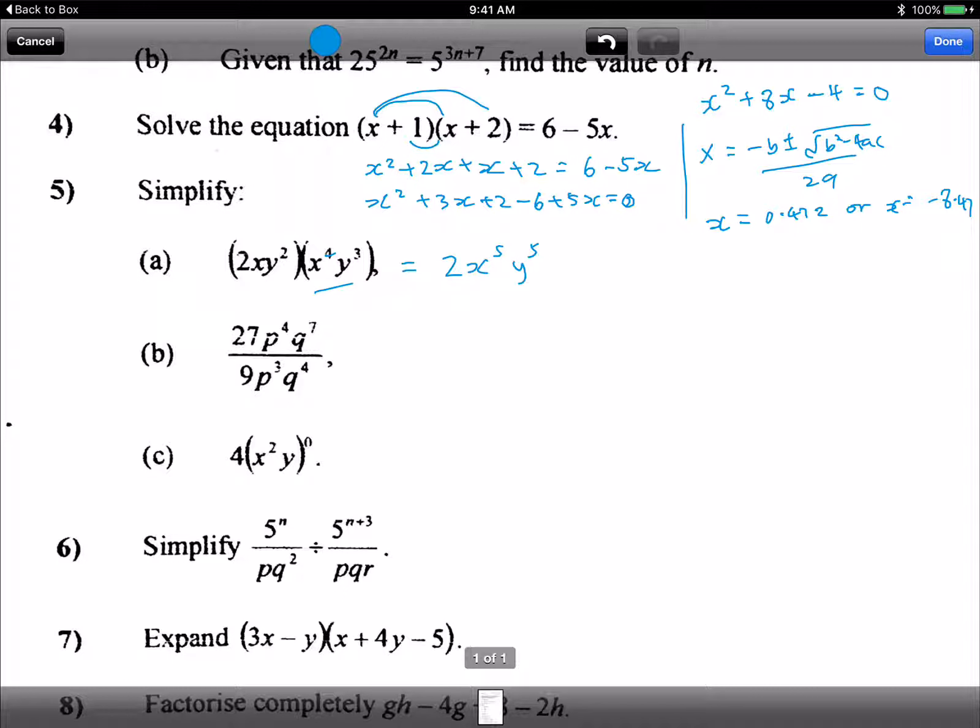Okay next one, next is cancellation. Now you look at 27 and 9, can divide by 3, divide by 9 you get 3 straight away. Then here cancel the p cube left with p, right here cancel the q to the 4 left q cubed, so that's the answer.